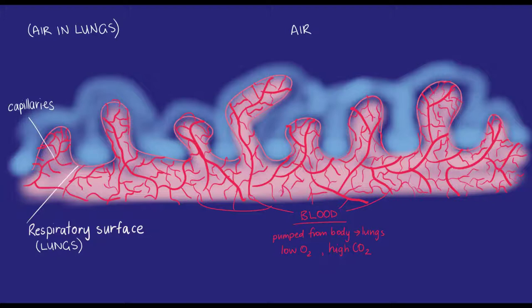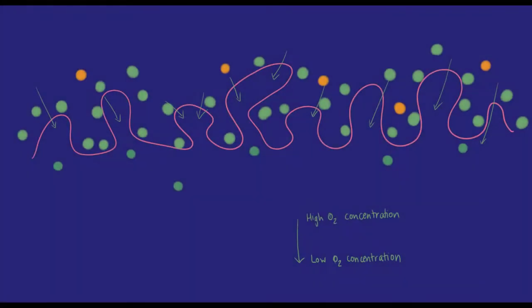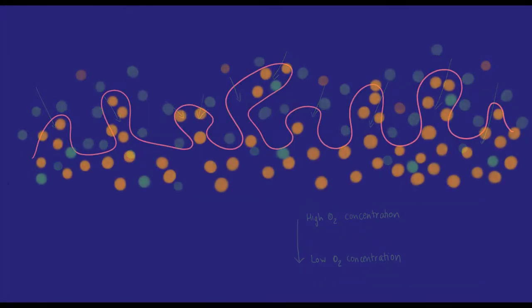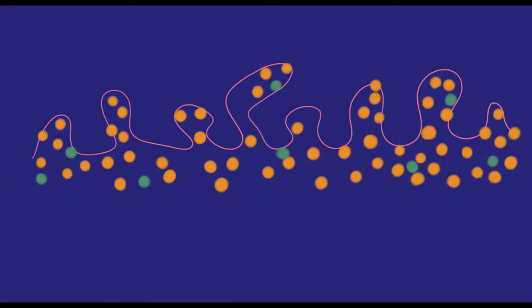The concentration of oxygen is higher in the fluid than it is in the capillaries, so it diffuses into the capillaries. Similarly, the carbon dioxide is at a higher concentration in the capillary than in the fluid in the alveoli, so it diffuses down its gradient, out away from the capillary.